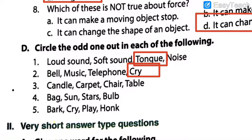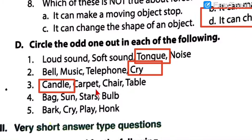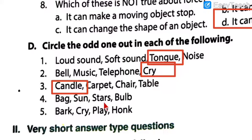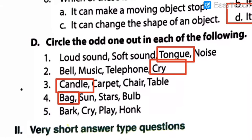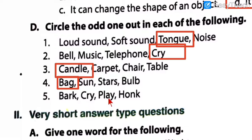Number four: bag, sun, stars, and bulb. The correct answer is bag, because sun, stars, and bulb are all luminous objects, but a bag is non-luminous. Number five: bark, cry, play, honk. You will have to think very genuinely to get this answer. I will keep this as homework for you, so let us see how many of you try it on your own. When you send the homework, this should be solved and I will immediately give the answer.